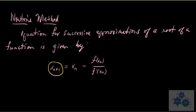This is the x value that represents the root of the tangent line, the x-intercept of the tangent line. So here is an equation for successive approximations of a root of a function, and it's given by this formula here. I won't go through the process of deriving this.